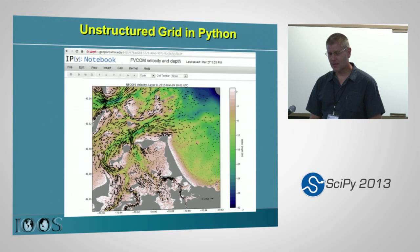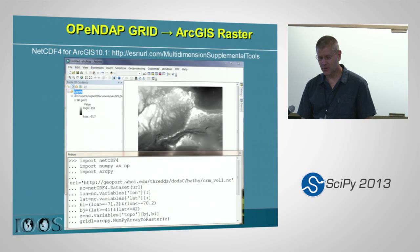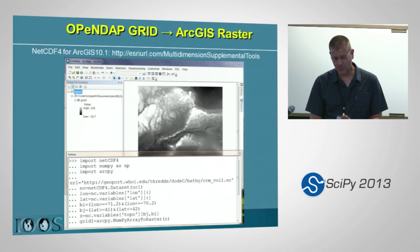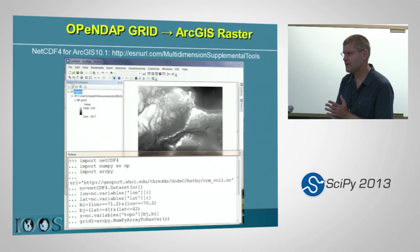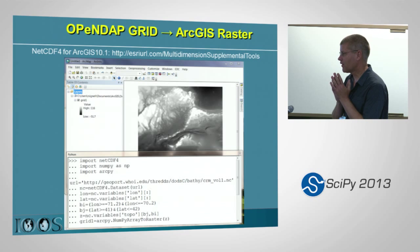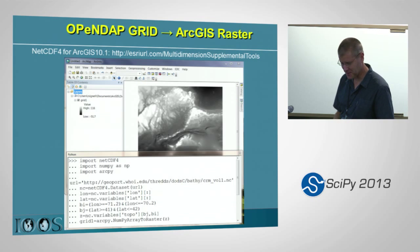For unstructured grids, we can plot them in Python — like this plot here. But at this point we don't have anything more sophisticated than that. We need a common data model for unstructured grids in Python, and we'd love for that to take place in IRIS. We're going to talk about that tomorrow. If you're interested in that stuff, please join us.